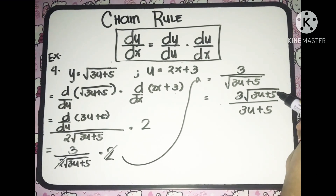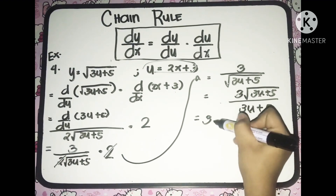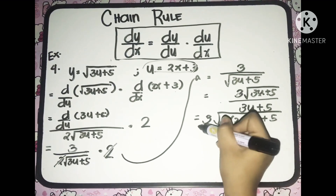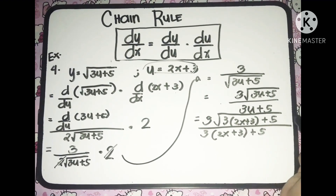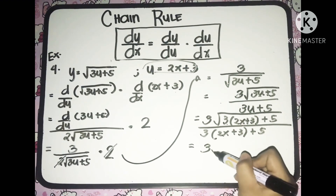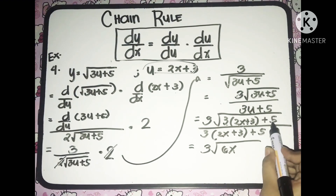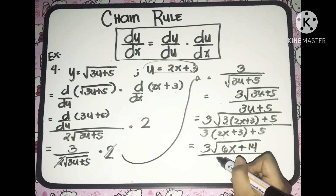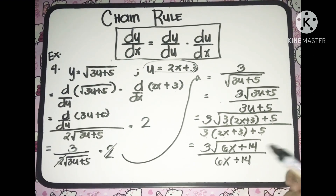Then, substituting the value of u, we'll have 2x plus 3. So 3 multiplied to the square root of 3 multiplied to 2x plus 3, plus 5, over 3 multiplied to 2x plus 3, plus 5. Let's distribute 3 into 2x plus 3 in the numerator and denominator. So 3 times 2 gives 6x, and 3 times 3 is 9, plus 5 equals 14. So we have 3 times the square root of 6x plus 14, all over 6x plus 9 plus 5 which gives 6x plus 14. And that is the final answer.